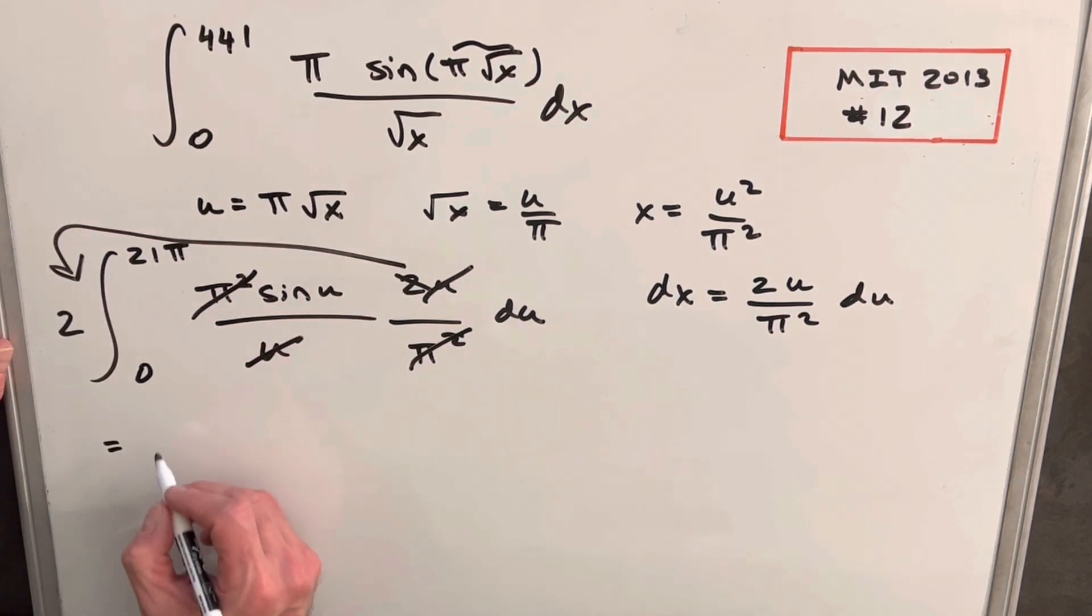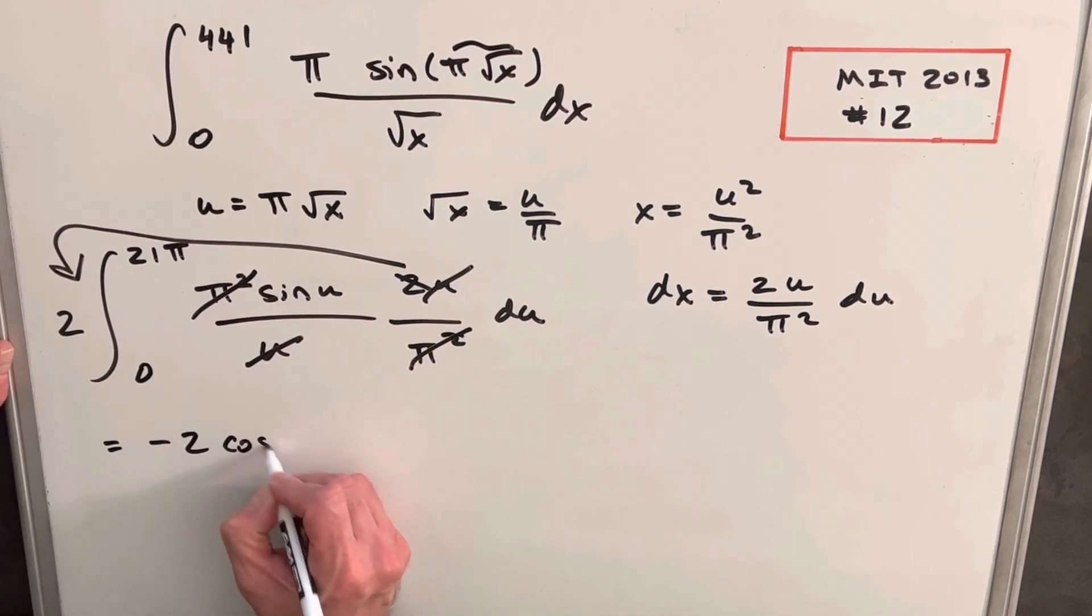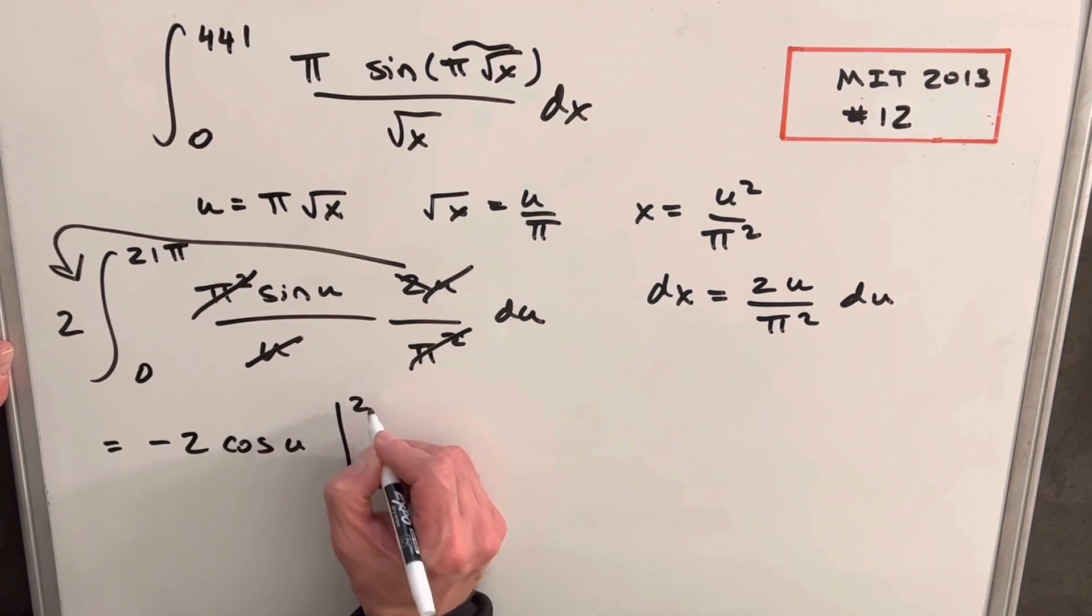And I'll bring the 2 out front. So then let's just integrate this. We're going to have our 2. Integral of sine u is minus cosine of u. We just need to evaluate this from 0 to 21 pi.